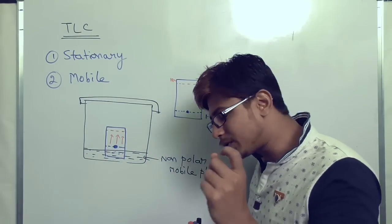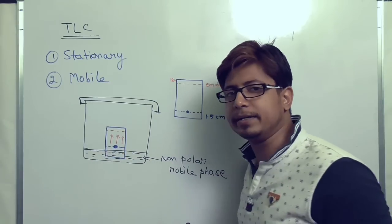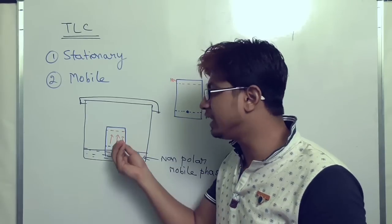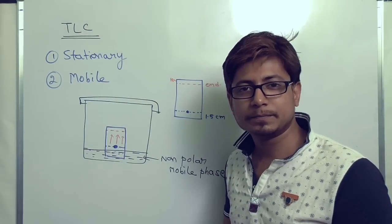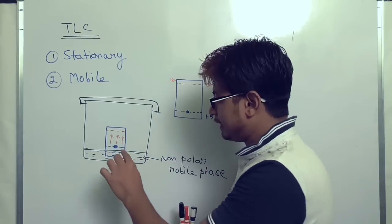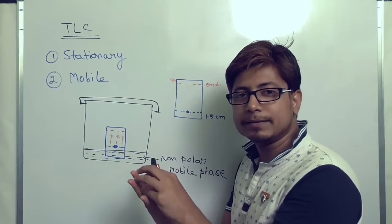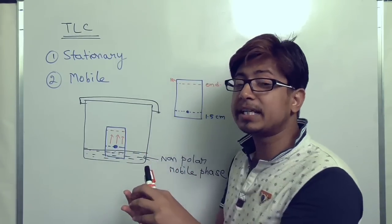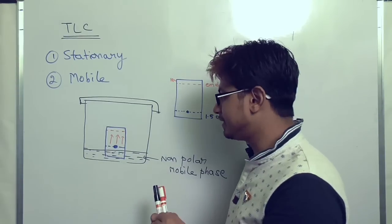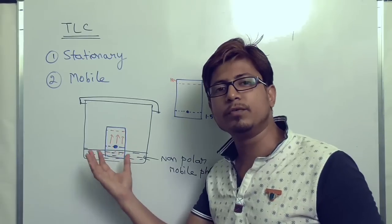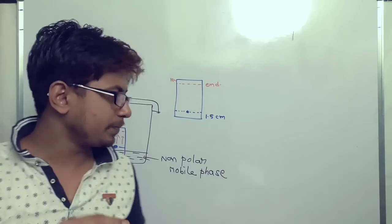Now imagine: if the sample's nature is very similar to that of the stationary phase, the sample will interact with the stationary phase more and move slowly. If the sample is not interacting with the stationary phase, then it will move faster with the help of the solvent. This is why some specimens move faster and further, while others move less — and that's how we end up with different spots in the TLC plate.